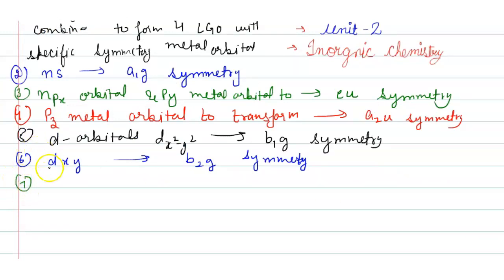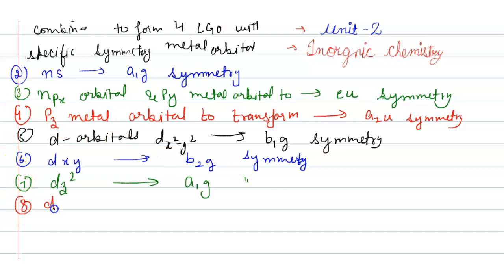The dz² orbital transforms to form a1g symmetry. The dxz and dyz orbitals transform to form eg symmetry.